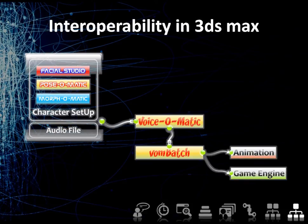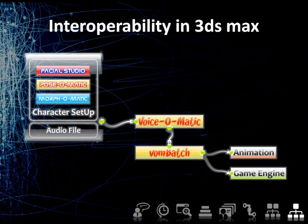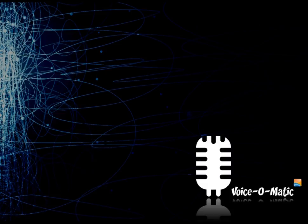For 3ds Max users, in addition to Von Batch and Voice-O-Matic, Di-O-Matic has developed several other plugins to help with your character facial setup. Facial Studio assists you in the creation of 3D heads and even includes preset mouth positions. Morph-O-Matic is the industry standard for morph target animations in 3ds Max. Pose-O-Matic allows you to easily set up and animate complex bone rigs and is also part of the VIP membership and lip sync package. For more information or questions, please contact us at www.di-o-matic.com.